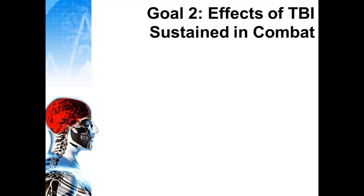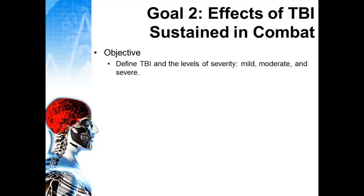Looking at the second goal — to understand the effects of TBI sustained in combat — we're going to define TBI and the levels of severity. There are different types of TBI based on how severe the injury is; those levels are mild, moderate, or severe. We're also going to describe different techniques used to examine the brain, such as MRIs and other scans.